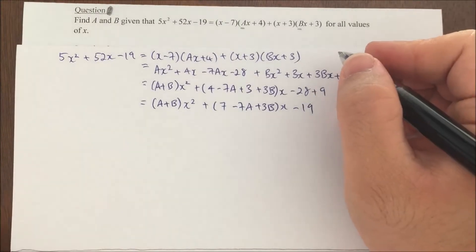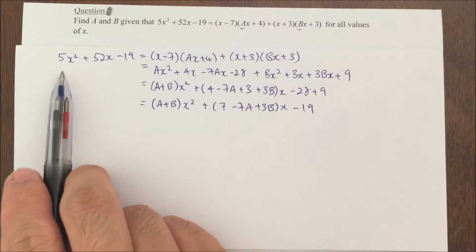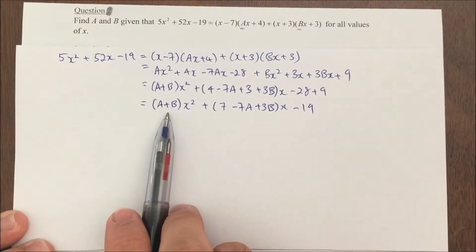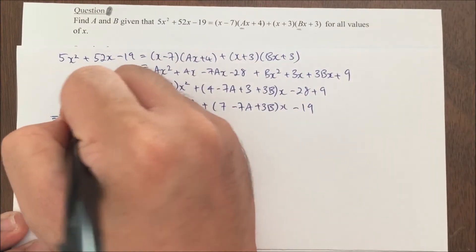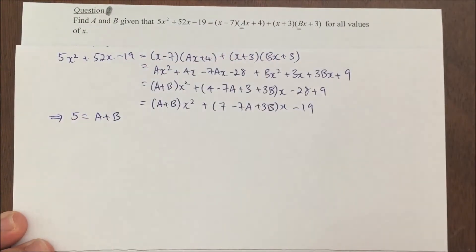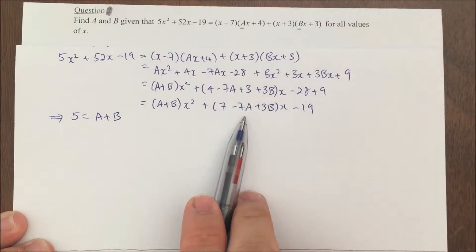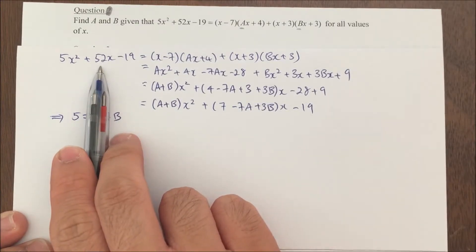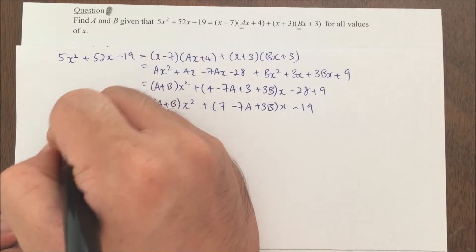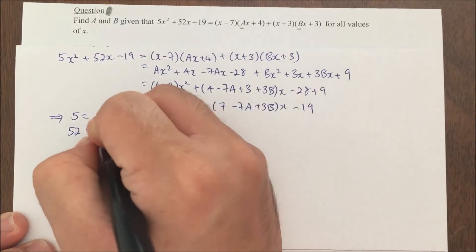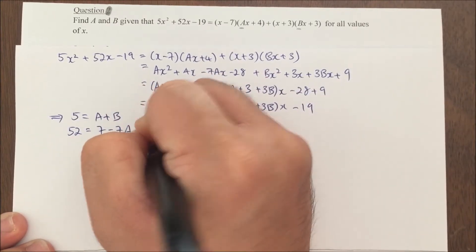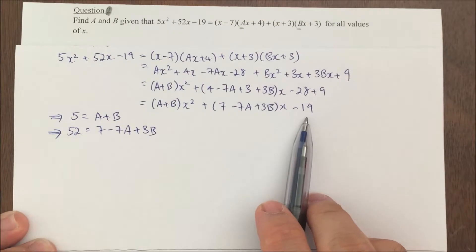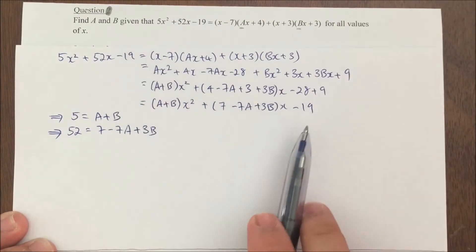Now I'm ready to compare my coefficients. Can you see that on my left hand side, I have 5x squared, but I have (a plus b)x squared. So I can actually say that 5 equals a plus b. For my coefficient of x, I can see that 52 equals 7 minus 7a plus 3b. For my constant, you can see that it's negative 19 and negative 19. This is also one way to double check your answer.